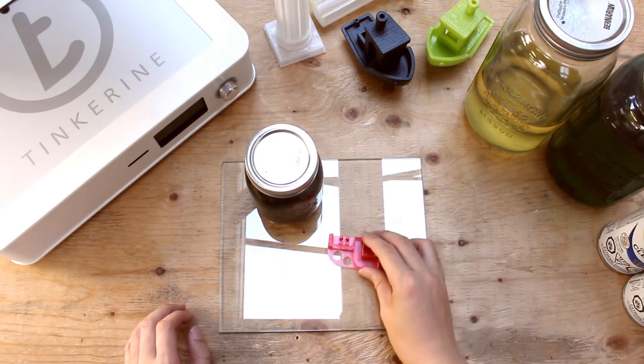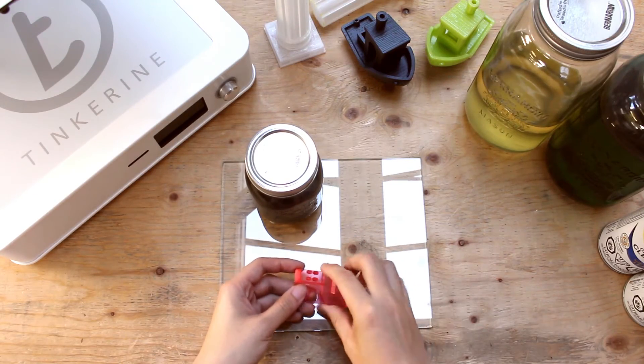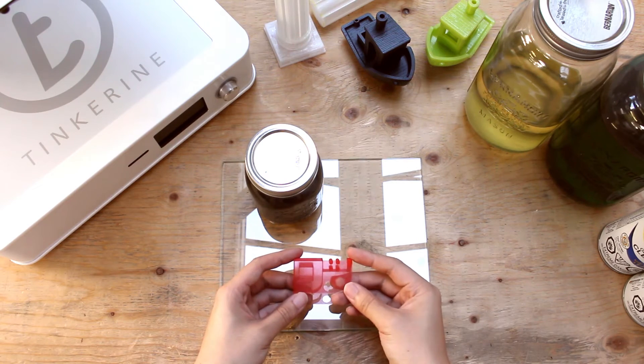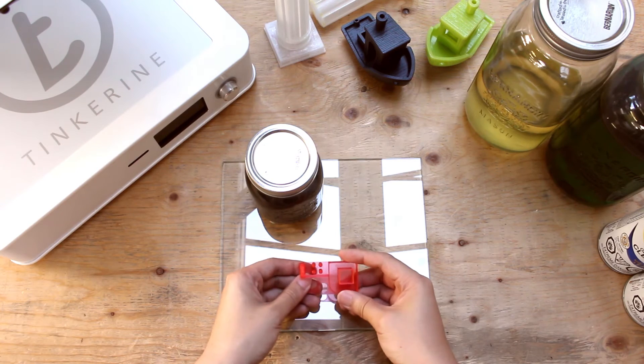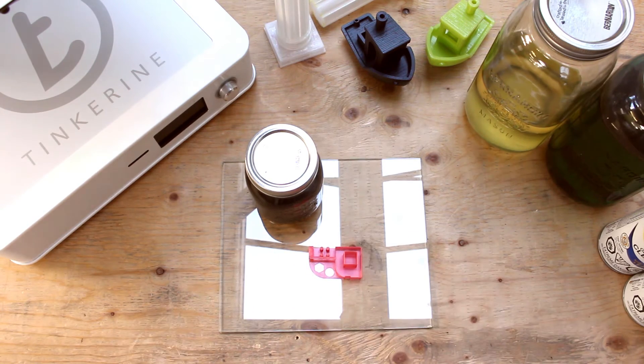Well there we have it. First time making and using ABS sludge. I think it's actually pretty easy to make and it's really good adhesive material. If you would like to use an alternative bed adhesive material and have access to ABS and acetone, you can definitely try this out.